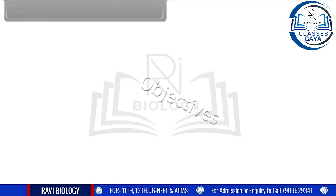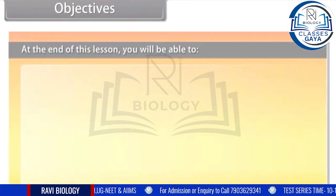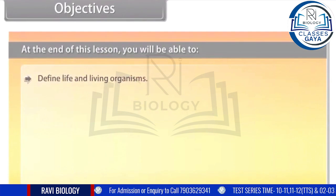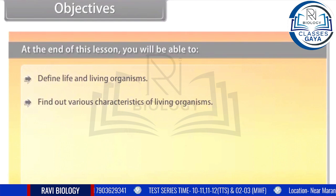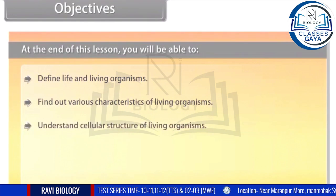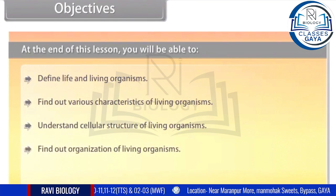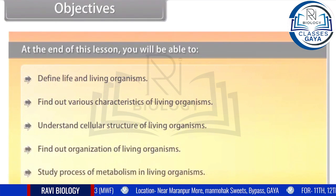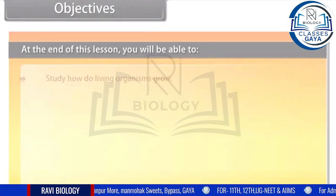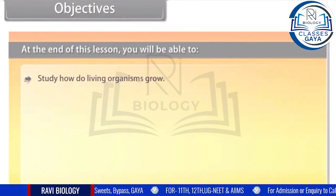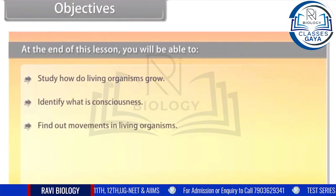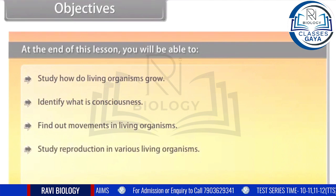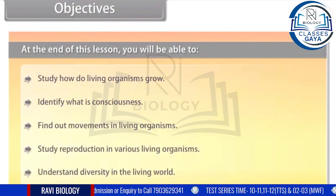Objectives. At the end of this lesson, you'll be able to: define life and living organisms; find out various characteristics of living organisms; understand cellular structure of living organisms; find out organization of living organisms; study the process of metabolism in living organisms; study how living organisms grow; identify what is consciousness; find out movements in living organisms; study reproduction in various living organisms; and understand diversity in the living world.